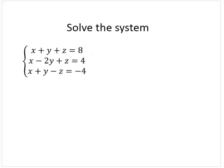So what I will do is let me add equations 1 and 3 together. That will give me an elimination on z. So adding equations 1 and 3, x plus x is 2x, y plus y is 2y, z and negative z is 0, and 8 and negative 4 is 4.